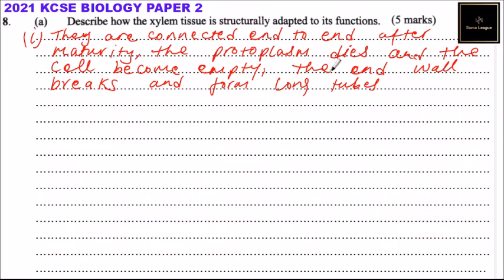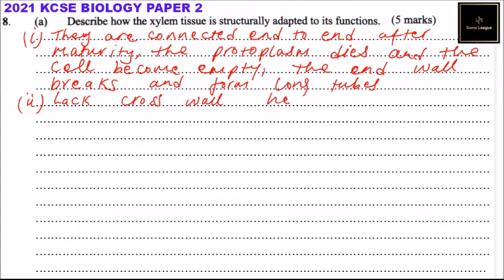Adaptation number two: the xylem vessels are continuous from the roots to the leaves, meaning water can be transported without interruption throughout the entire plant.